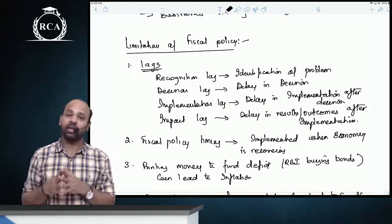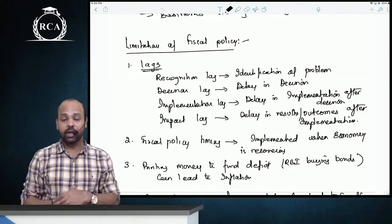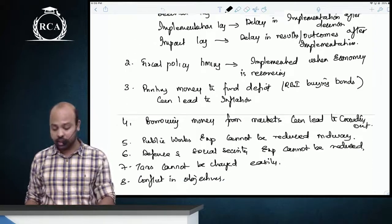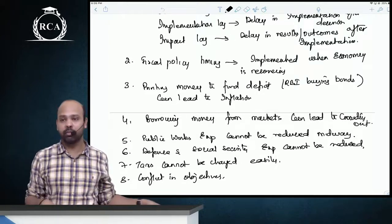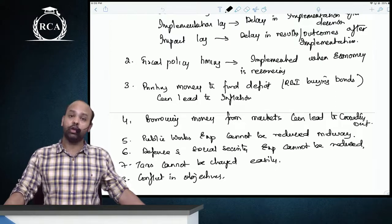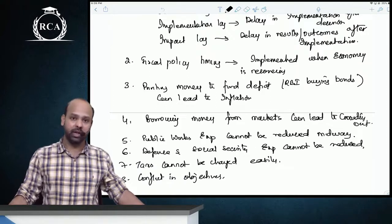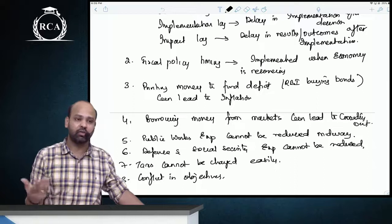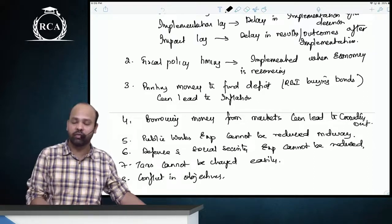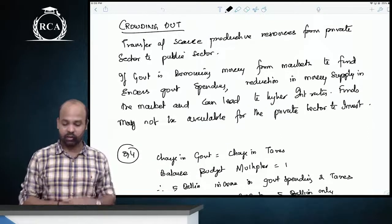The limitations of fiscal policy include various lags: recognition lag, decision lag, implementation lag, and impact lag. There can also be a difference in timing — by the time a fiscal policy is implemented, the economy may already be in a recovery phase. Other limitations: higher taxes may reduce people's motivation to earn income; unemployment subsidies may reduce motivation to work. Governments may not be able to reduce spending on defense, social welfare, or midway public works. Changing tax rates is not easy. Borrowing from markets can lead to crowding out, and printing money can lead to inflation.